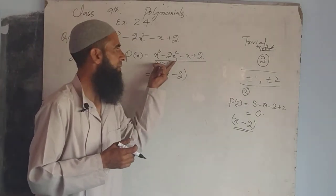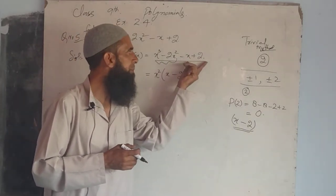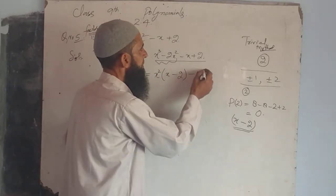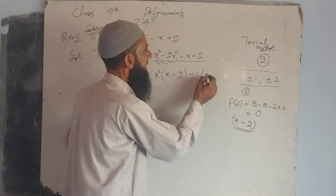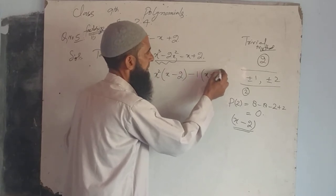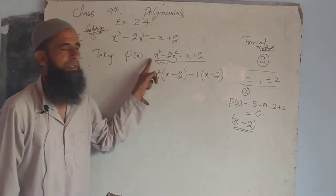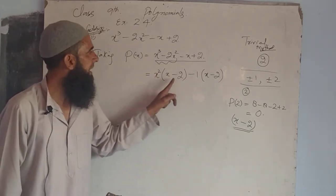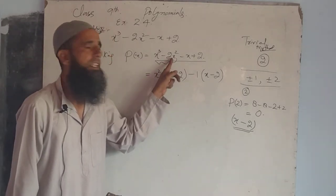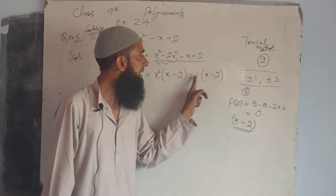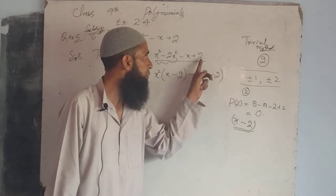In these two terms, we will take minus one common. It becomes x minus 2. Now see: x² times x becomes x³, x² times minus 2 becomes minus 2x², minus 1 times x becomes minus x, minus times minus gives plus 2.